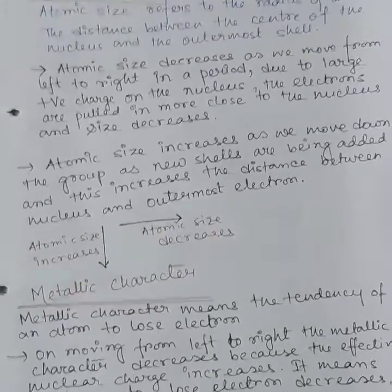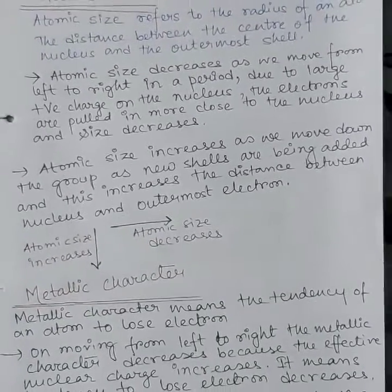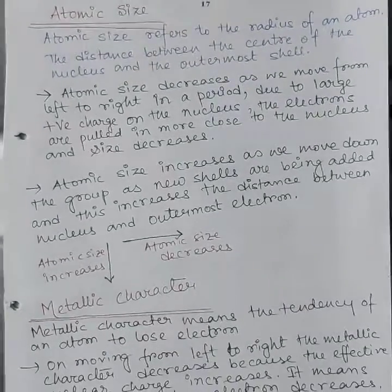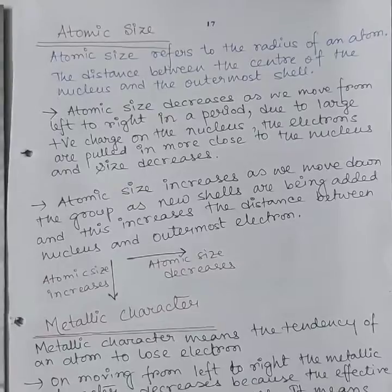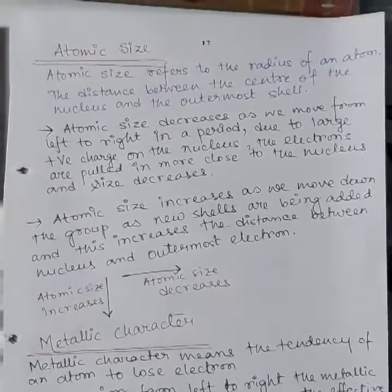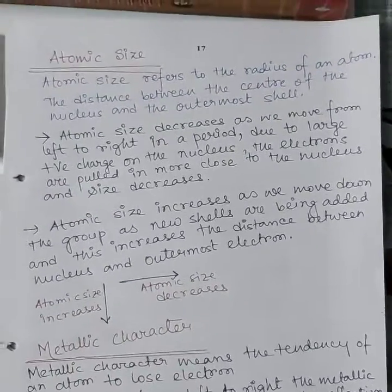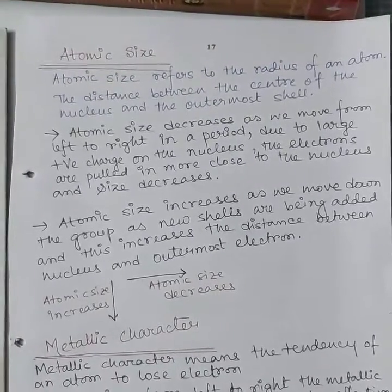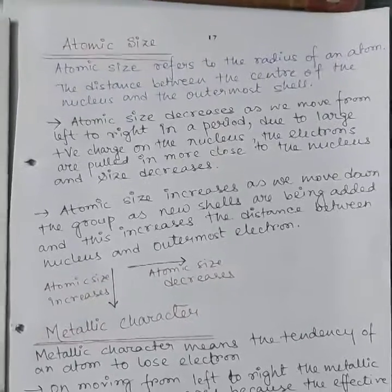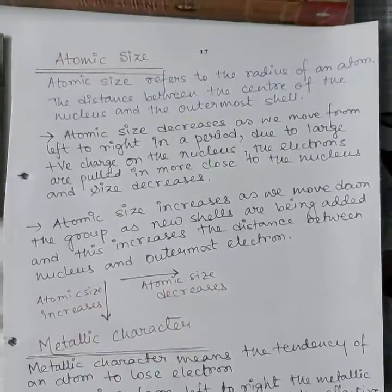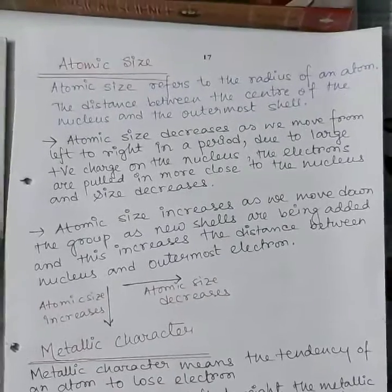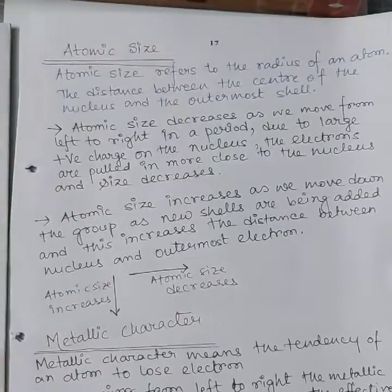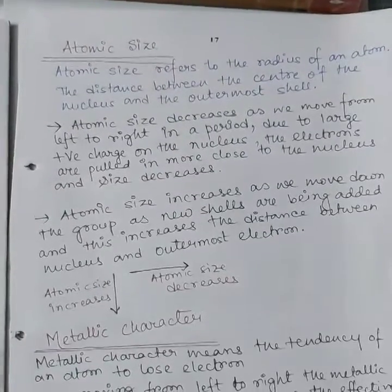Metallic character refers to the tendency of an atom to lose electrons. Moving from left to right in a period, metallic character decreases because the effective nuclear charge increases, meaning the tendency to lose electrons decreases. Metallic character increases as we go down a group because the effective nuclear charge decreases.